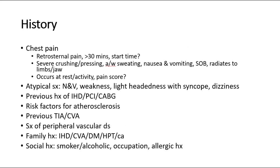For history taking, the patient will complain of chest pain. The characteristics are retrosternal pain lasting more than 30 minutes, severe crushing or pressing in nature, associated with profuse sweating, nausea and vomiting, shortness of breath, and radiation of pain to the left arm or jaw.